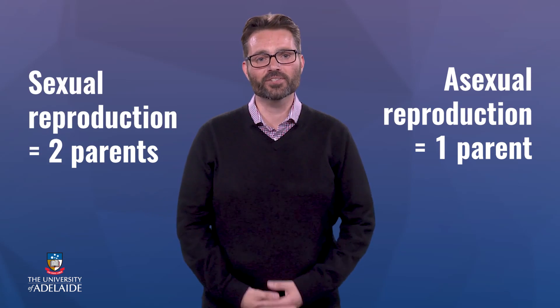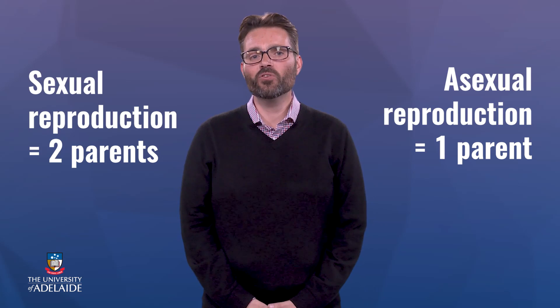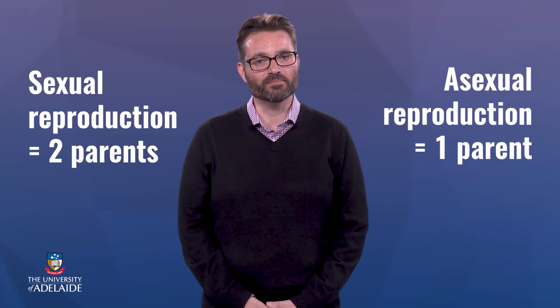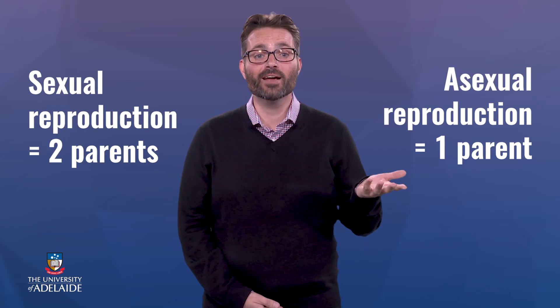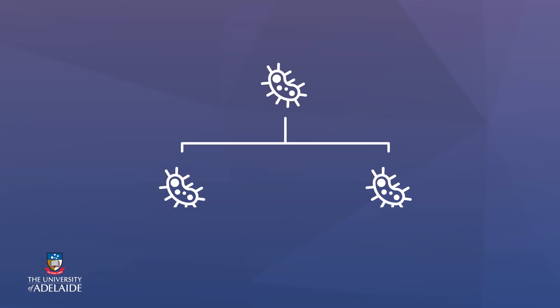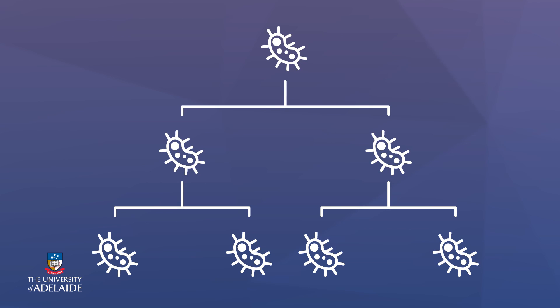In nature, two forms of reproduction occur: asexual and sexual reproduction. The difference between these forms of reproduction comes down to one simple question: one parent or two? In asexual reproduction, there is only one parent. This single parent gives rise to offspring that are genetically identical to the parent.